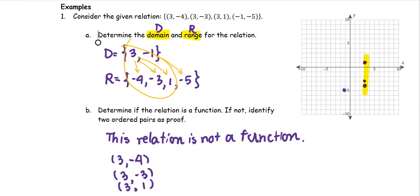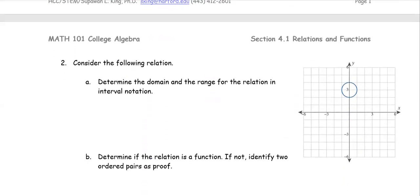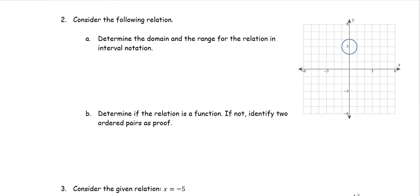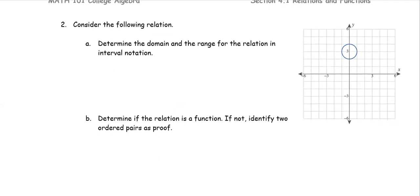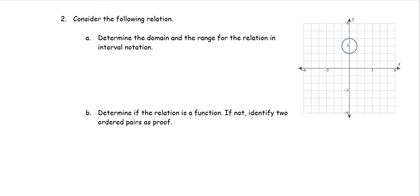Let's look at another example. For this part, the problem gives us a graph of a circle. We determine the domain and the range for this relation in interval notation. The domain is the set of the x-values, and the range represents the set of the y-values.